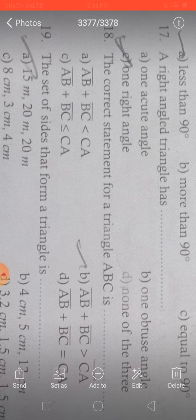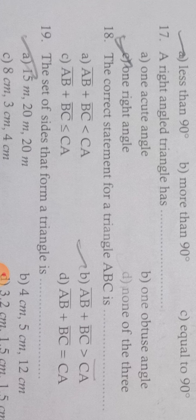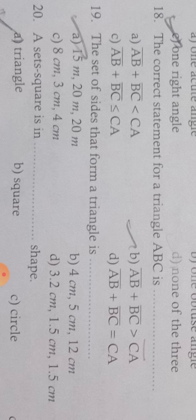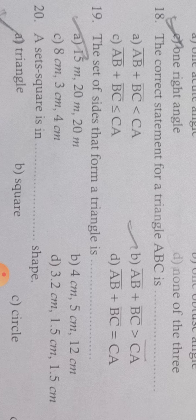The triangle inequality: AB plus BC must be greater than the third side CA. So AB plus BC is greater than CA. Now, which set of sides can form a triangle?